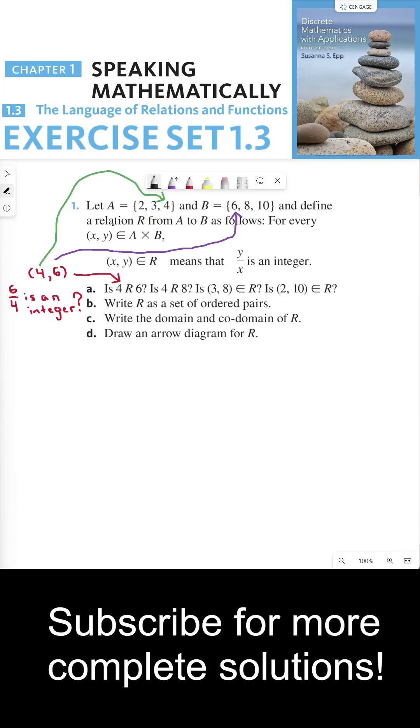And define a relation R from A to B as follows. For every ordered pair X and Y that's in the set A cross B, the ordered pairs in the relation means that Y divided by X is an integer.